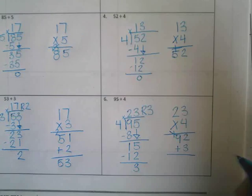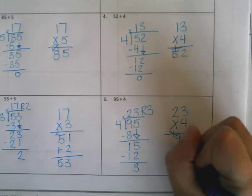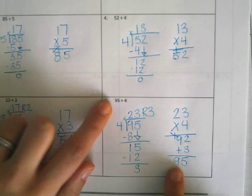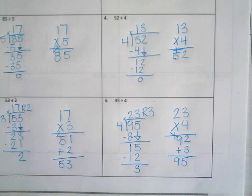So, my remainder was 3. So, 92 plus 3 is? 95. Alright, does this problem and our whole match? Yes. So, we are good to go.